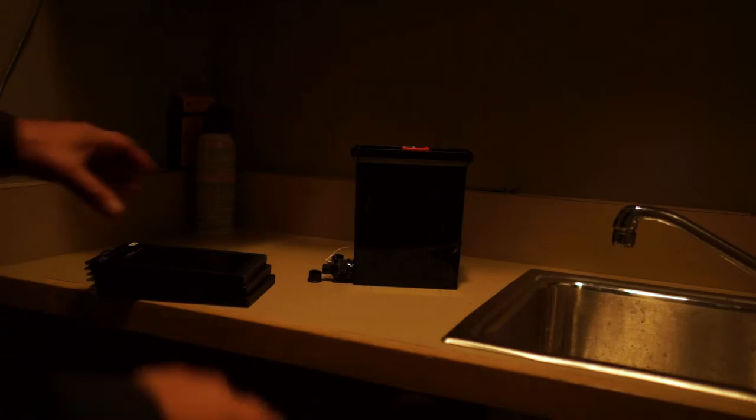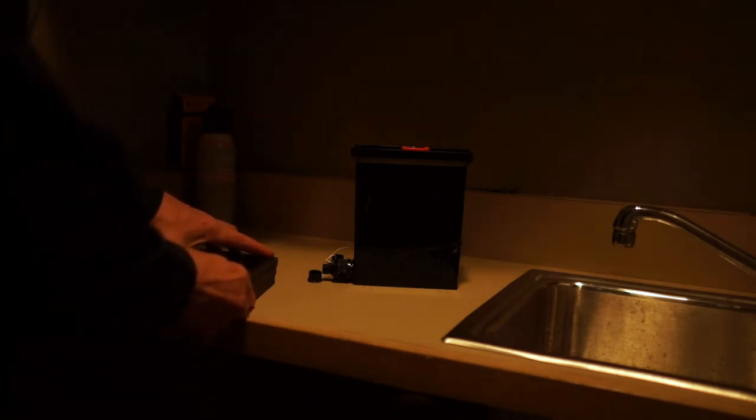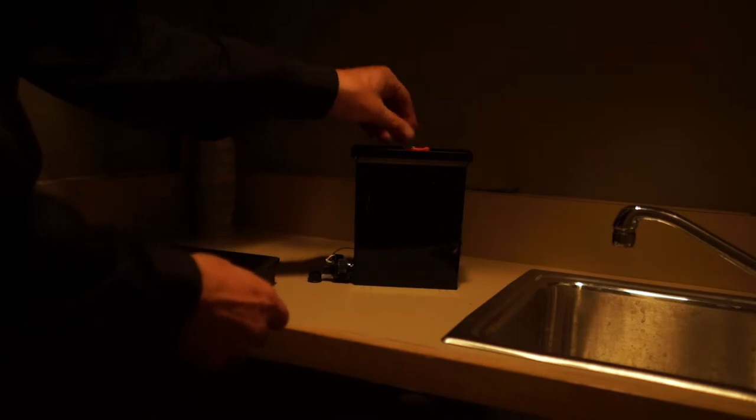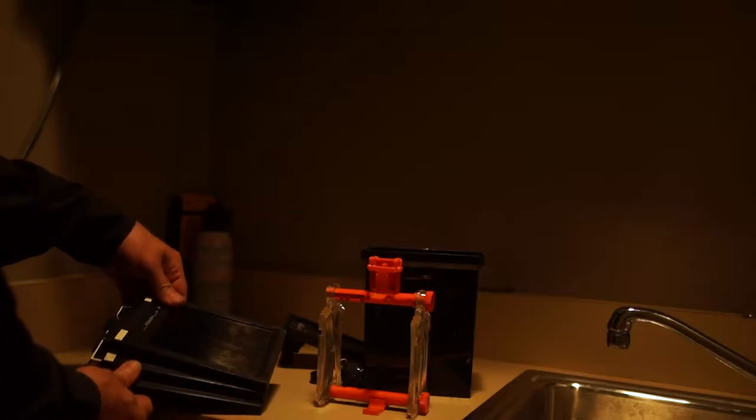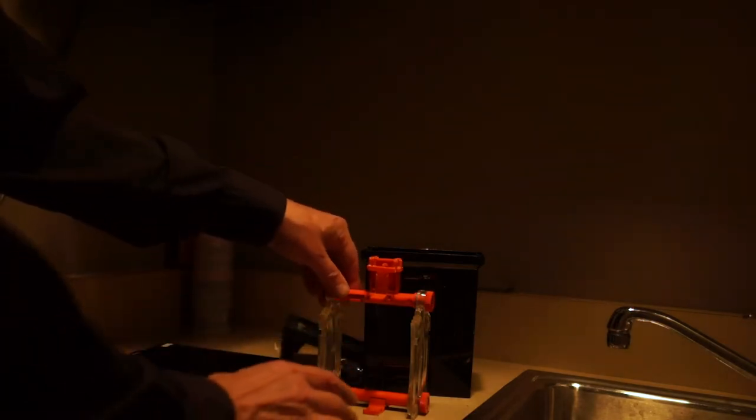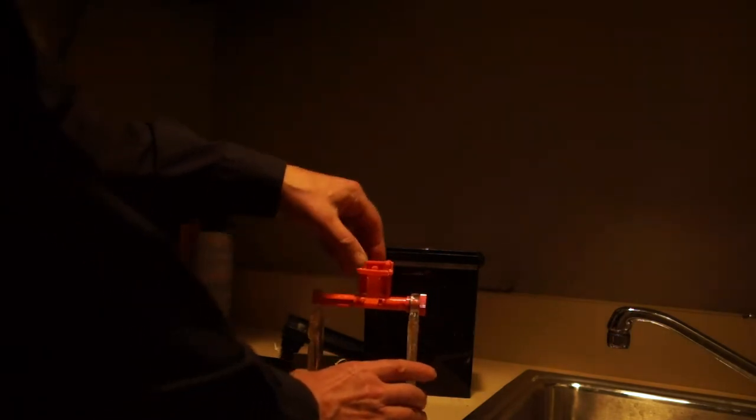Here we're loading 4x5 film into the 4x5 Combi Plan tank. Three holders here with the dark slides on black to indicate that we exposed the film. Before we turn off the lights, we want to make sure we have everything organized so we can easily find it in the darkness.